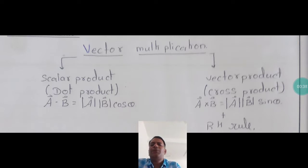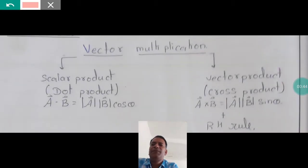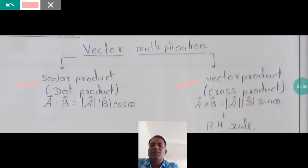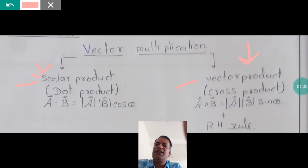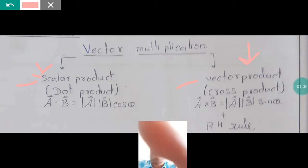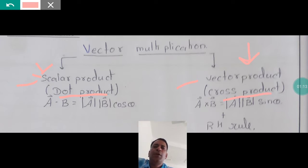One we call the scalar product and the other we call the vector product or the cross product. If you multiply two vectors by the scalar product method, the result is a scalar quantity. When you multiply by the vector product method, you get a vector quantity as a resultant. The scalar product is also known as the dot product, and the vector product is also known as the cross product.